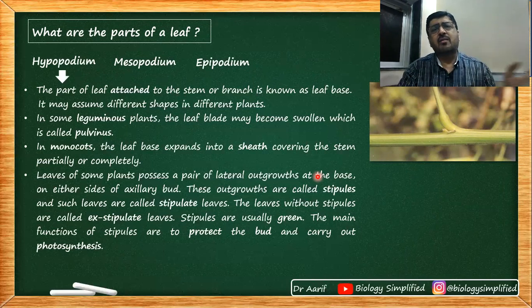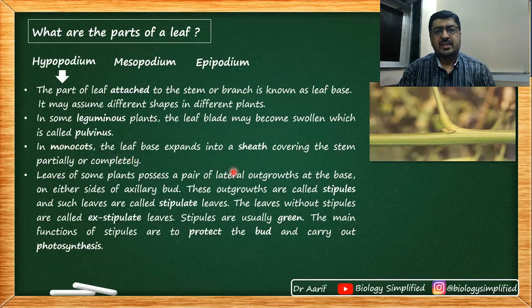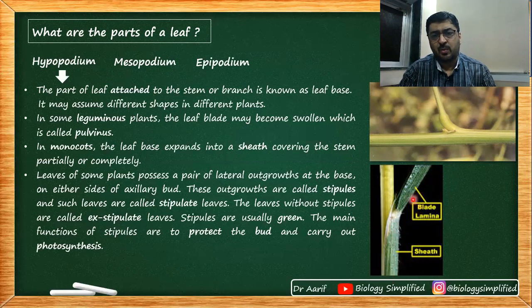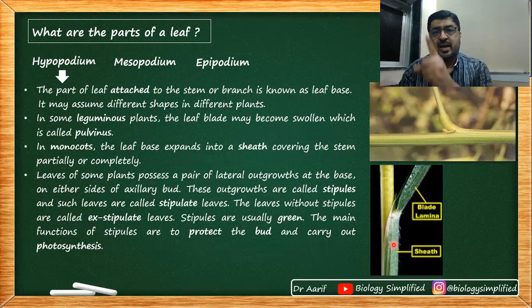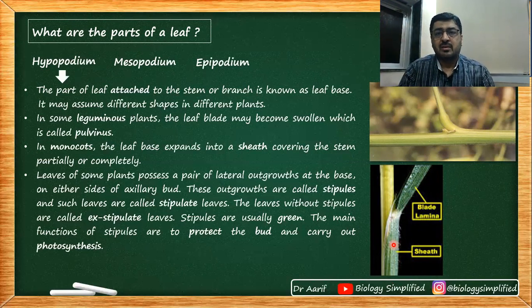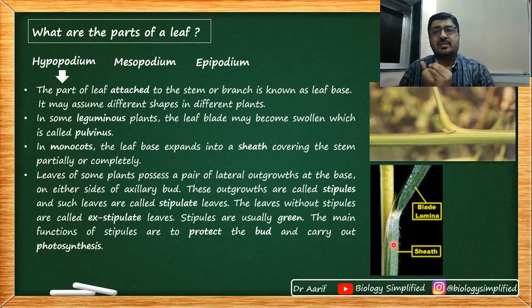If a plant is leguminous, its leaf base should be pulvinus. In monocots, the leaf base expands and covers the stem — this is called a sheathing leaf base. This sheathing can be complete or partial depending on the species.